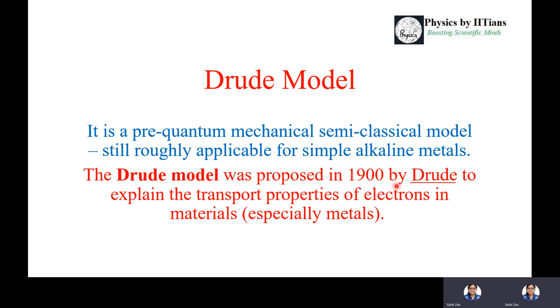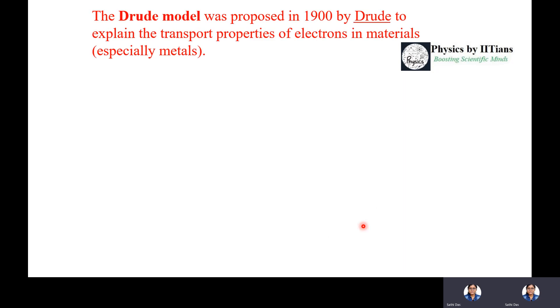The Drude model was proposed in 1900 by scientist Drude to explain the transport properties of electrons in materials, especially in metals.